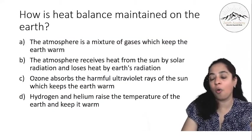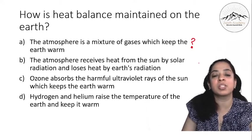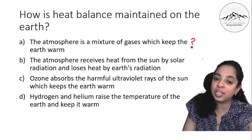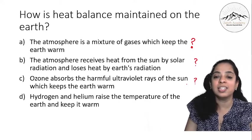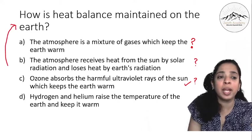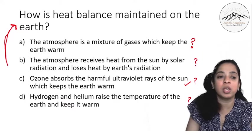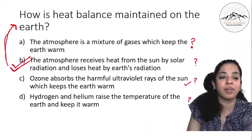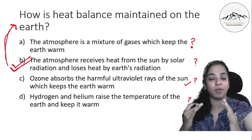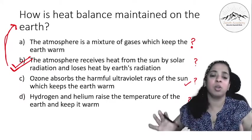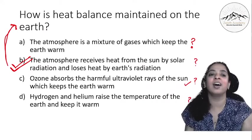How is heat balance maintained on the earth? The atmosphere is a mixture of gases which keep the earth warm. Or the atmosphere receives heat from the sun by solar radiation and loses heat by earth's radiation. Or ozone absorbs harmful ultraviolet rays of the sun which keeps the earth warm? See, these options are correct, but which one is most appropriate, most related to the question? That we have to select. Hydrogen and helium raise the temperature of the earth and keep it warm. So which is the most correct option? This. If you have understood the chapter very well, the atmosphere receives the heat from the sun by solar radiation. So our atmosphere layers and the ozone layer allow the heat from the sun to reach the earth. But heat lost by the earth in the form of earth radiation, they are trapped by our atmosphere. They are not allowed to go out. That is why the earth's heat is balanced.